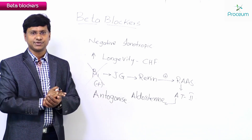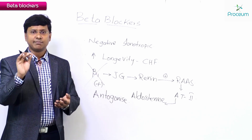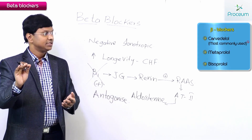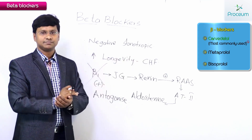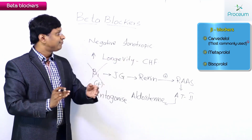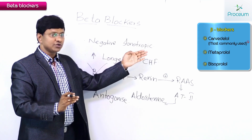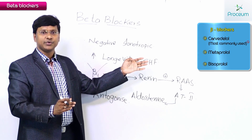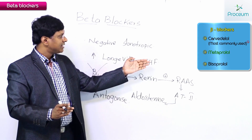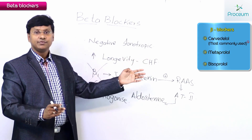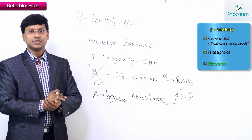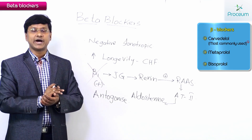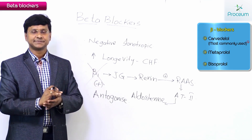We have many beta blockers, but the ones useful in congestive heart failure — and this is a very important MCQ point — the most widely used beta blocker is carvedilol, followed by metoprolol and bisoprolol. These are the most widely used beta blockers in congestive heart failure.